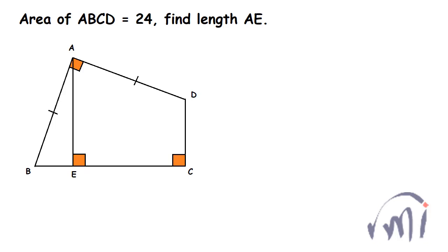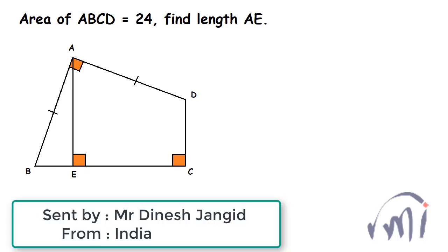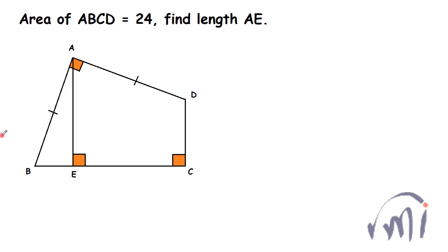Hi, so here we have a problem which was sent by Mr. Dinesh Changit from India. In this problem we have a quadrilateral ABCD where AB is equal to AD, and the area of this quadrilateral is equal to 24. We have to find the length AE.